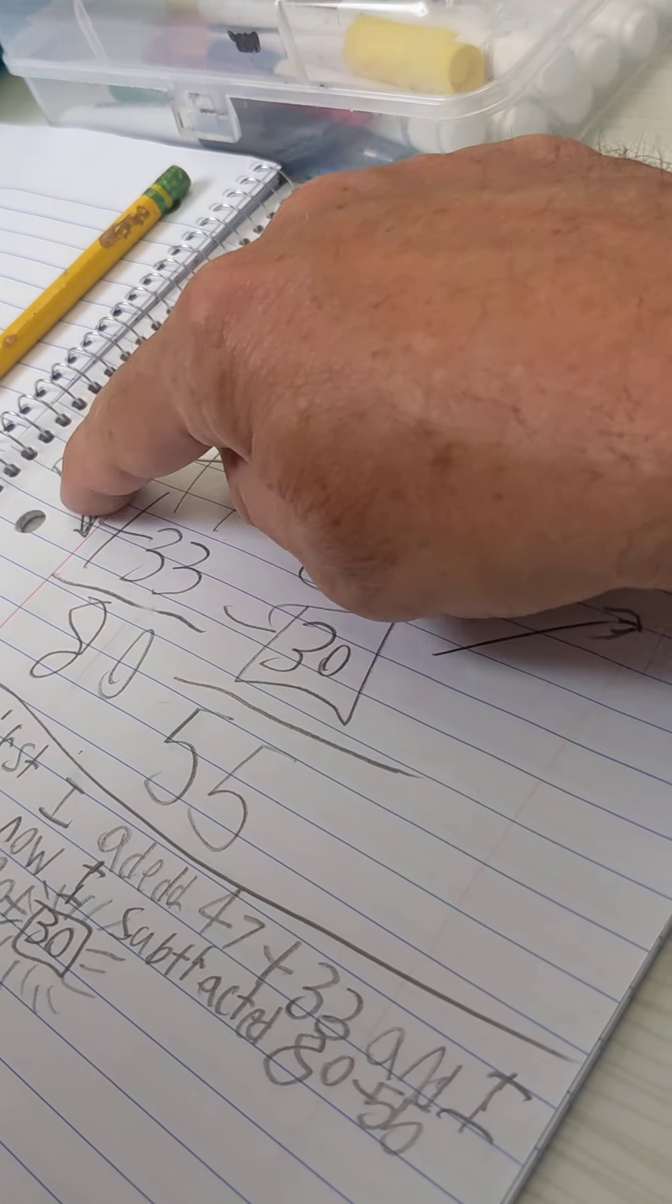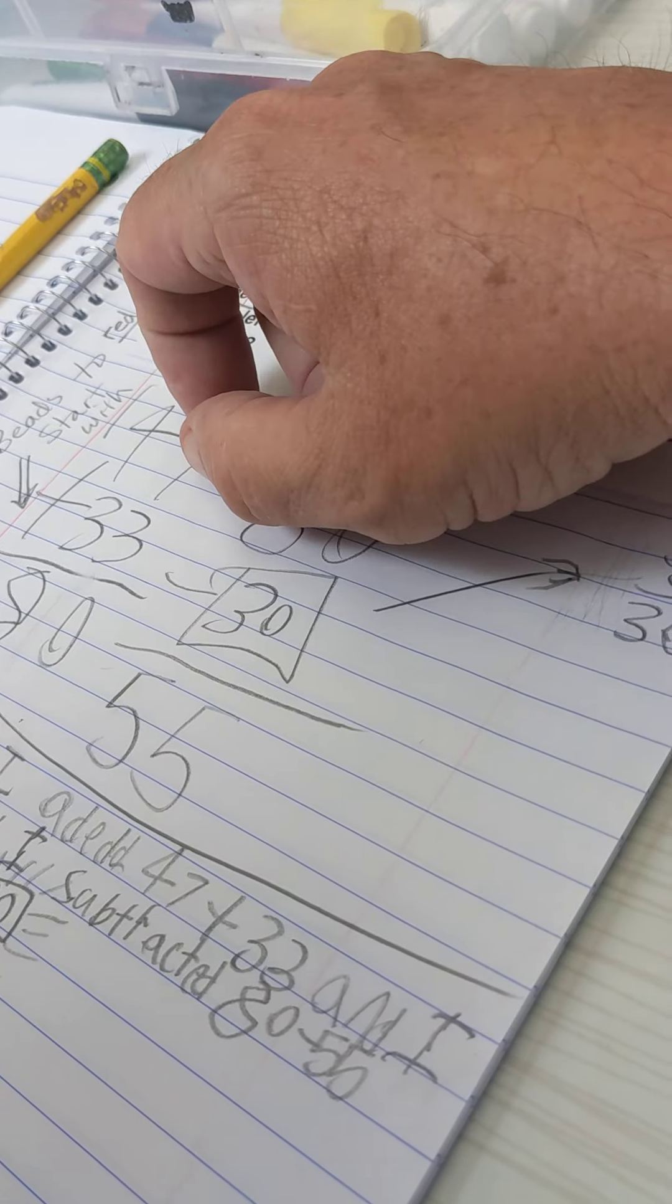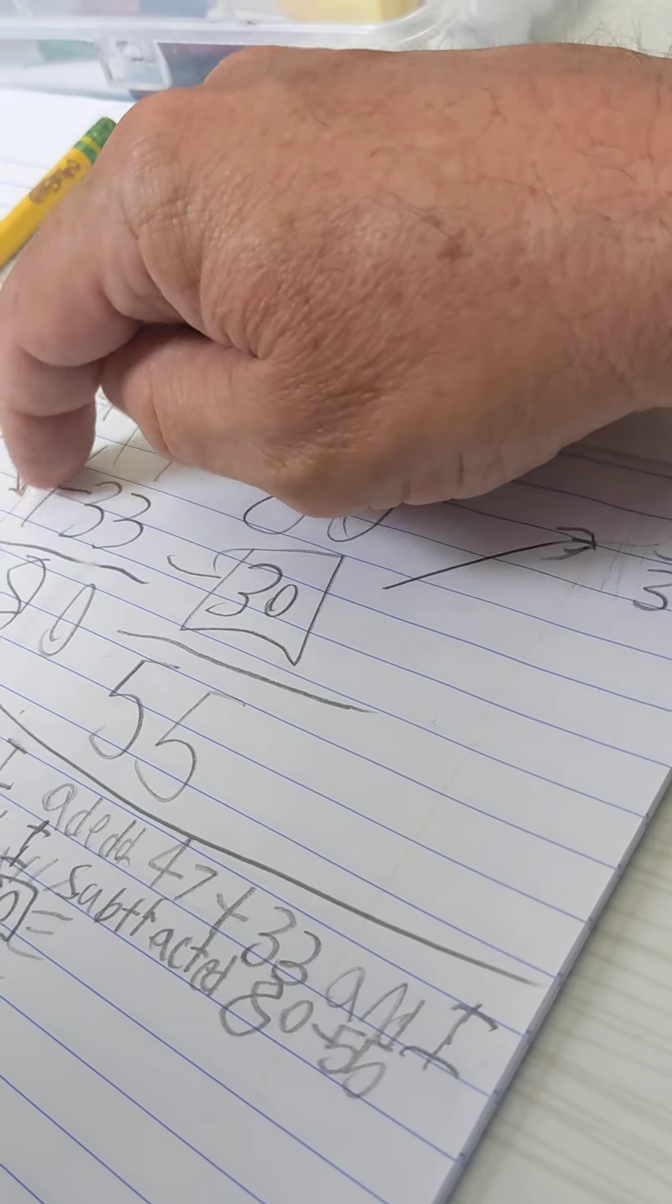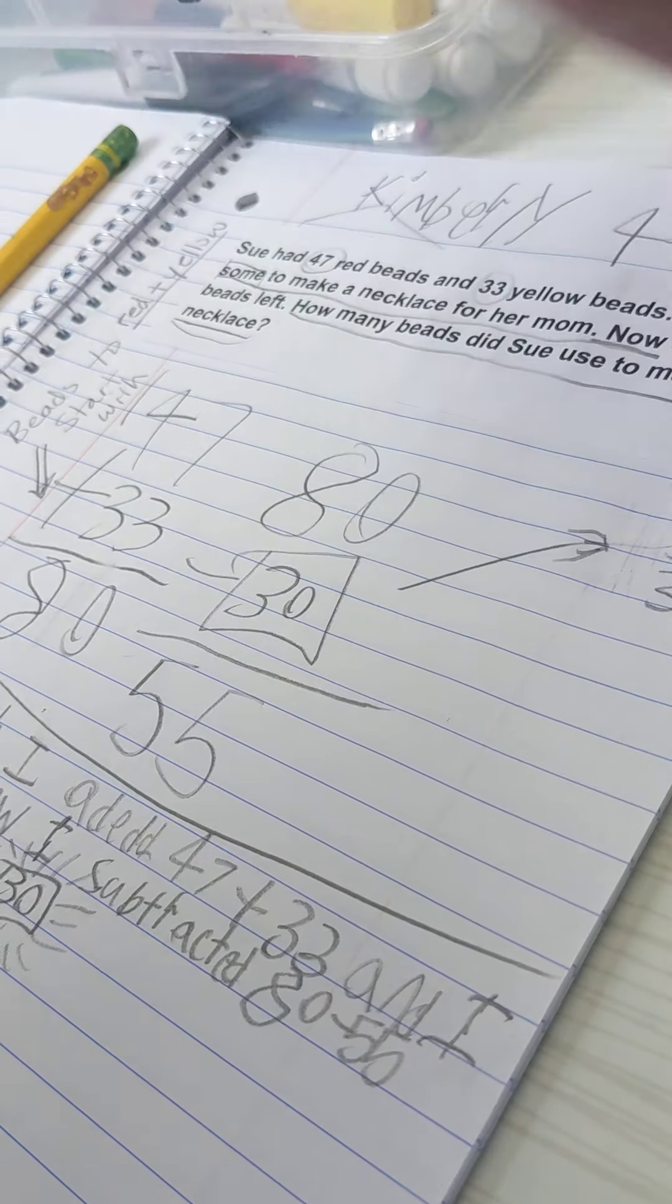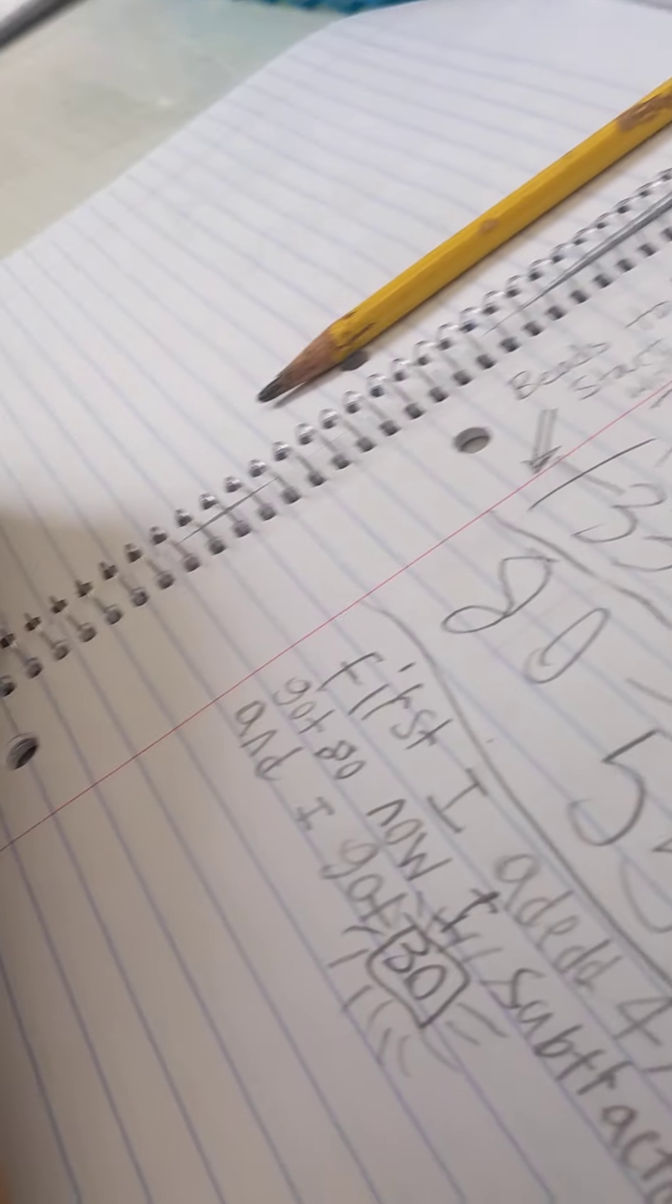So when I'm asking for reasoning, I'm asking for something like this. And I like to label it by putting an arrow and pointing to it. All right? All right, 30 seconds.